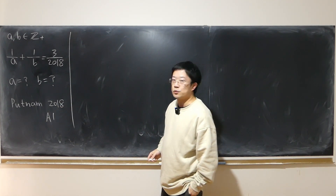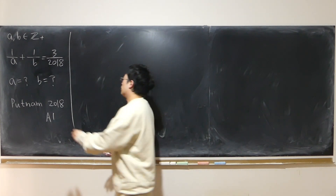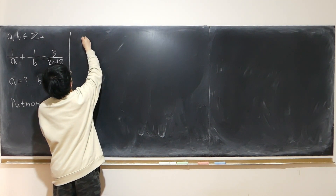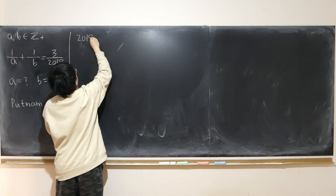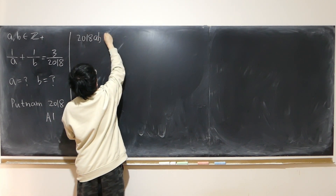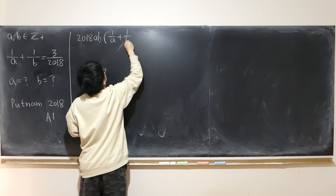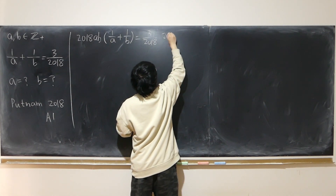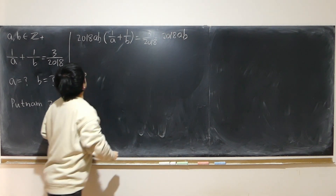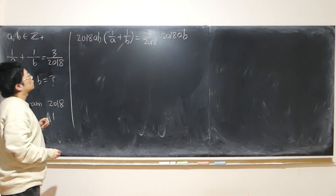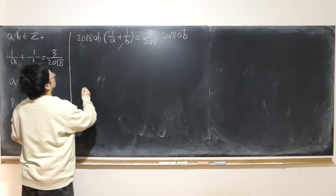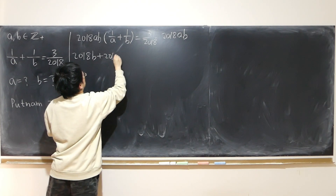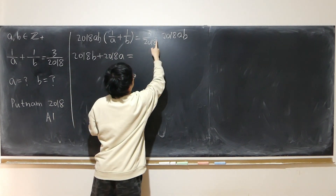The usual strategy: we multiply both sides by 2018 × A × B. So on the left we get 2018B + 2018A, and on the right we get 3AB.